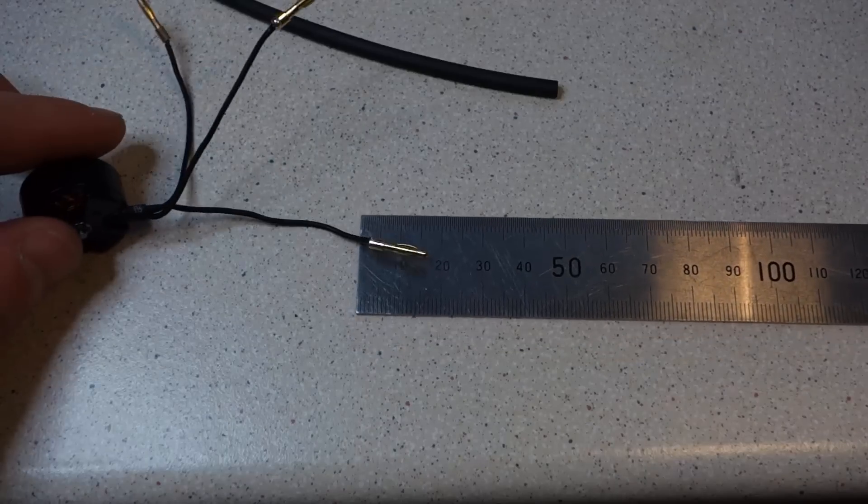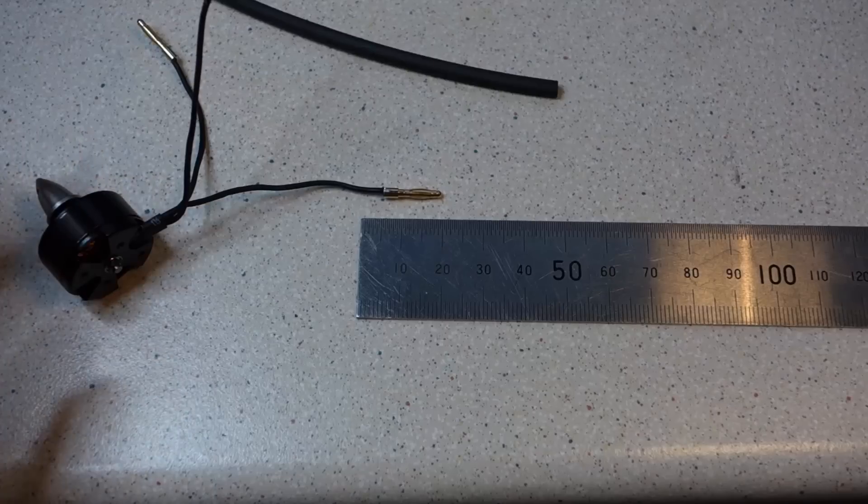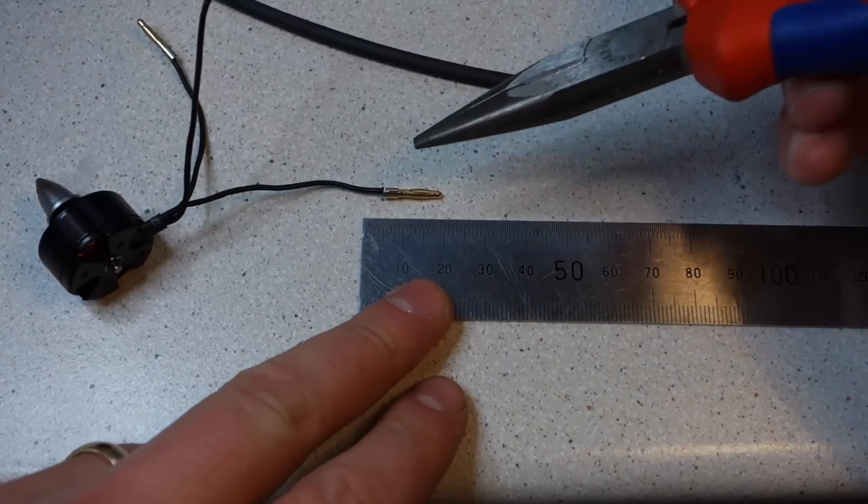Ok, the next job is to measure how much heat shrink you're going to need. Most heat shrink shrinks down up to a third of its starting diameter and also a little bit lengthwise.